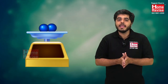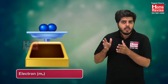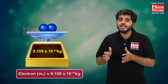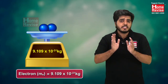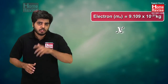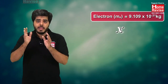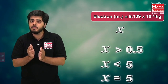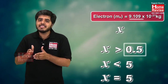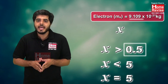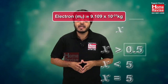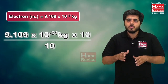Let us learn with an example. The mass of an electron is 9.1 × 10⁻³¹ kg. First, we need to check its range. Our x value is 9.1. It should be greater than 0.5 and less than or equal to 5. Is 9.1 less than or equal to 5? No. So we need to bring it into the required range.